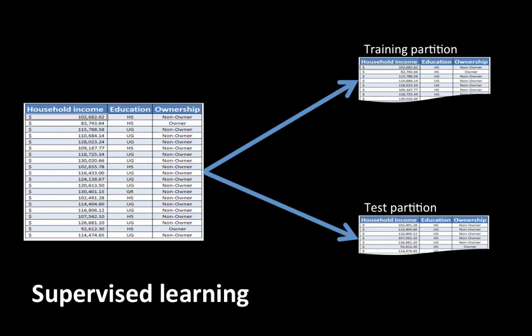Then the remaining 15,000 rows of data, we'll treat as a test partition. We'll build the model and then try to use it to make predictions on the test partition. Remember, this is historical data, so we have the value of ownership for all 50,000 rows. But we deliberately put away 15,000 rows and built our model based only on 35,000. Now we can apply the model to the remaining 15,000 rows and see the discrepancies between the model predictions and the real class to which every row belongs.